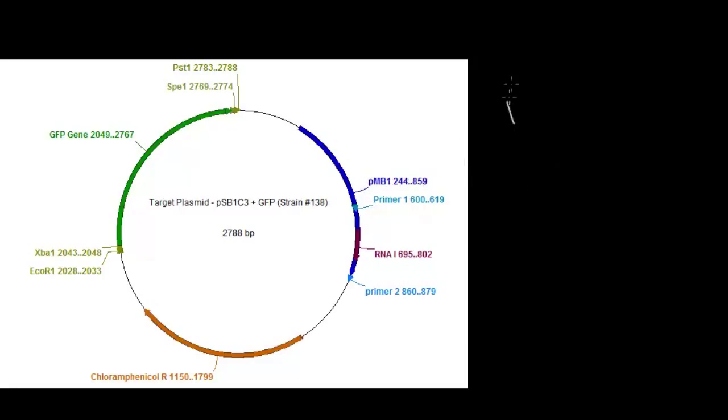There are many origins of replication. So aside from PMB1 there's COLE1, and there's P15 just to name a few common ones. And of course what differs between these is the copy number of the plasmid. So in a bacterial cell the plasmid might reproduce itself a different number of times depending on which origin of replication it has.